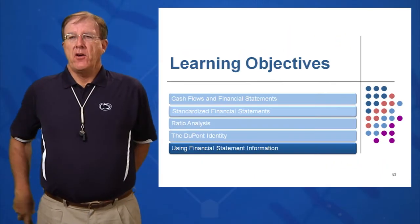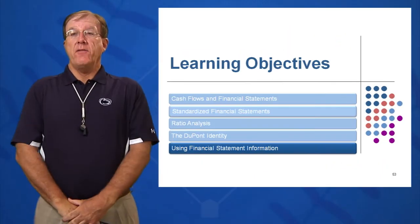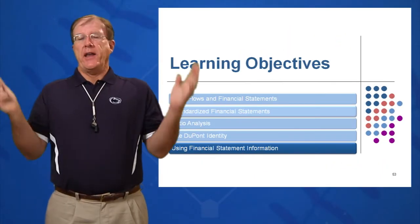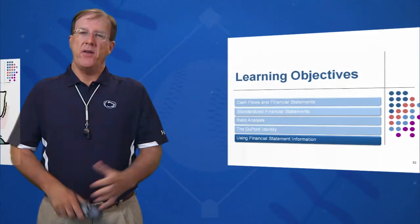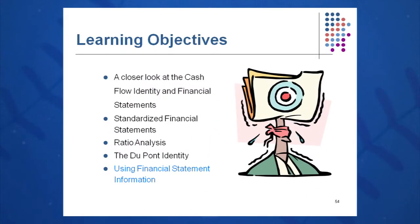Starting up the final learning objective: how do we use all this financial information, these financial statements? We have an income statement, a balance sheet, and a statement of cash flows. Now we have all these ratios. How do we use this information to our greatest advantage?